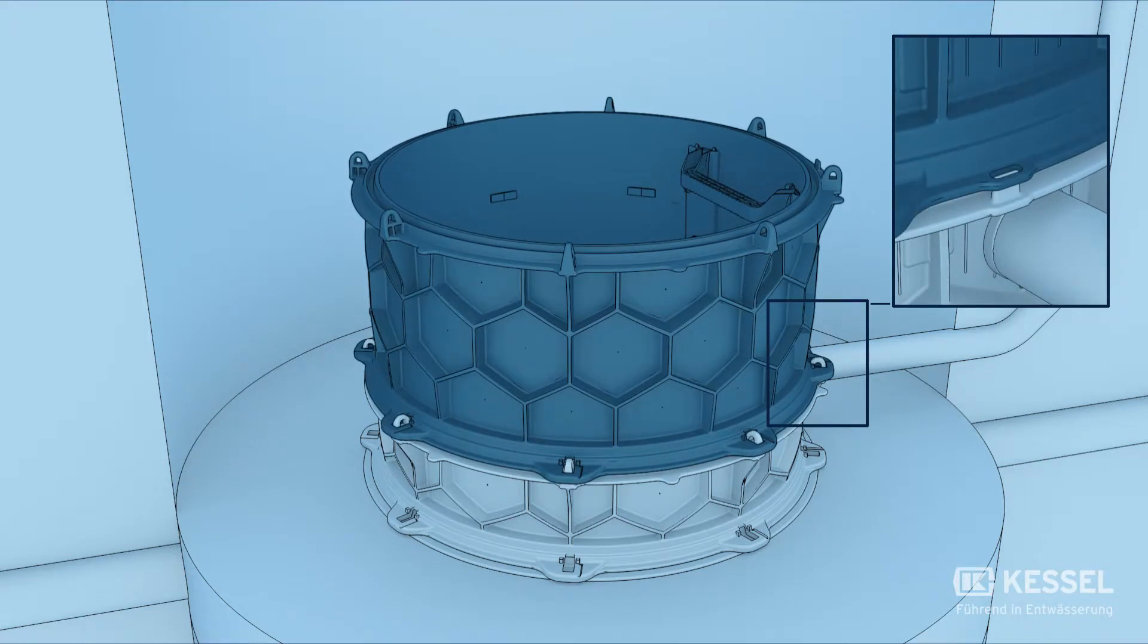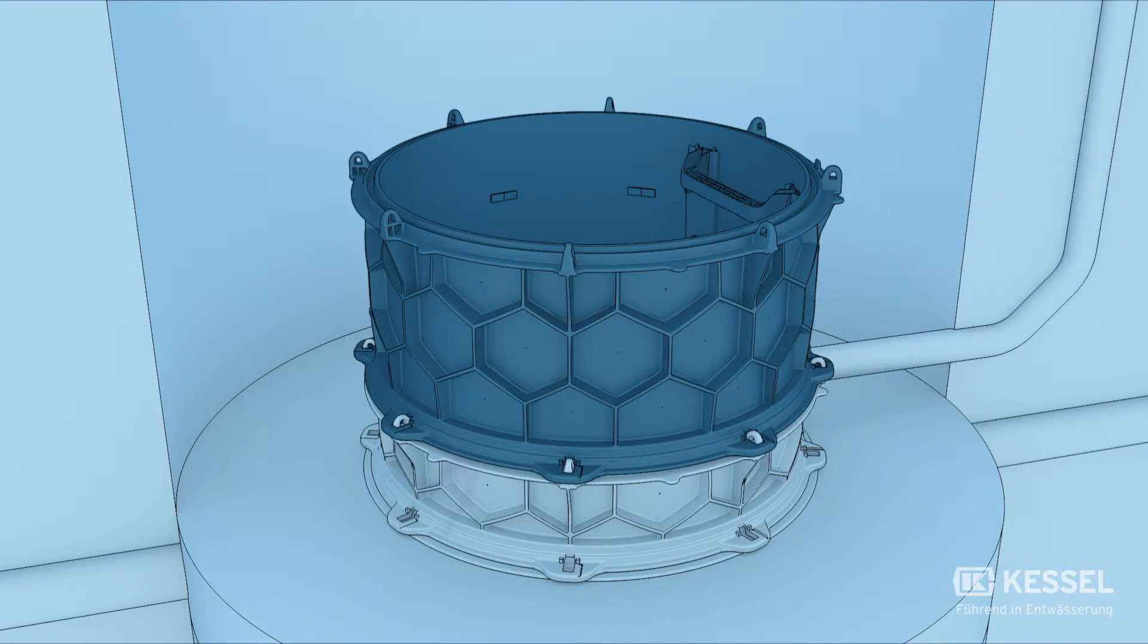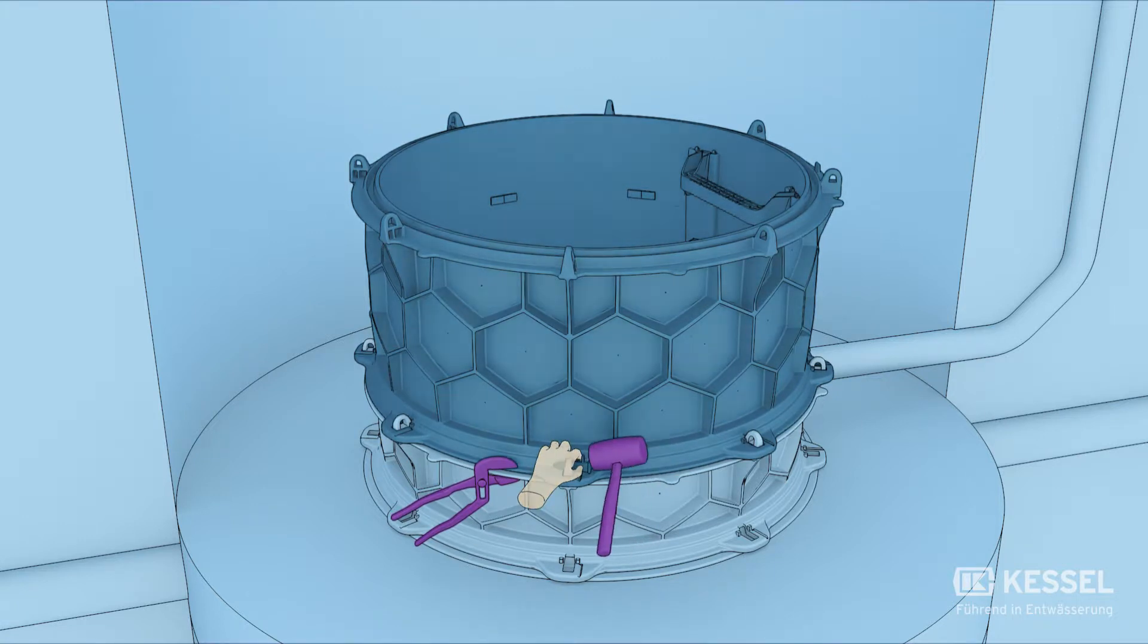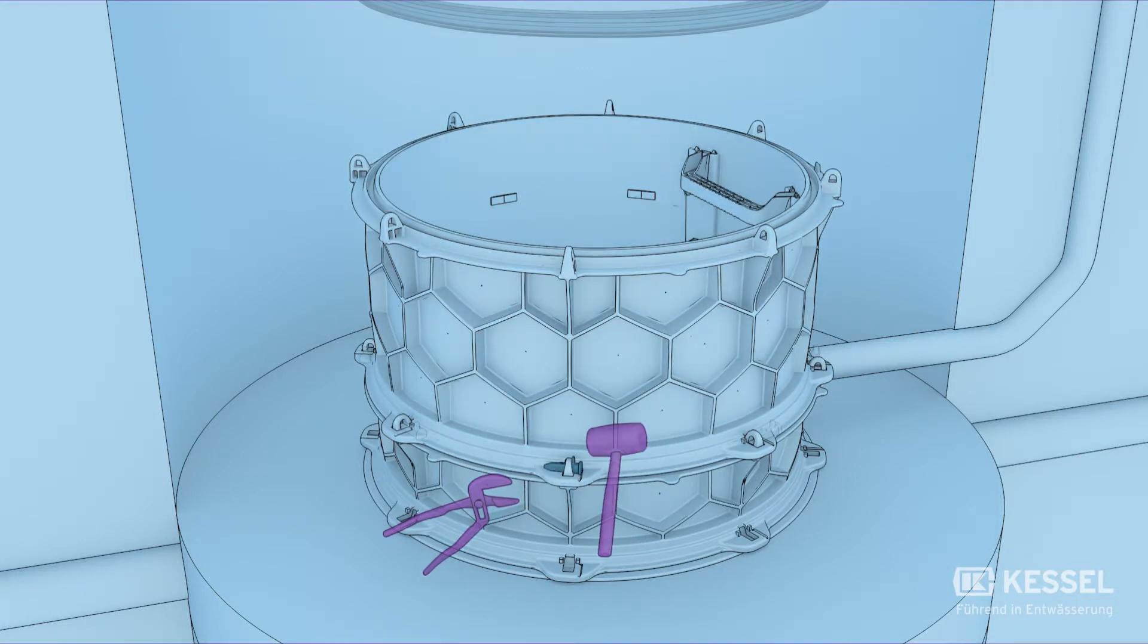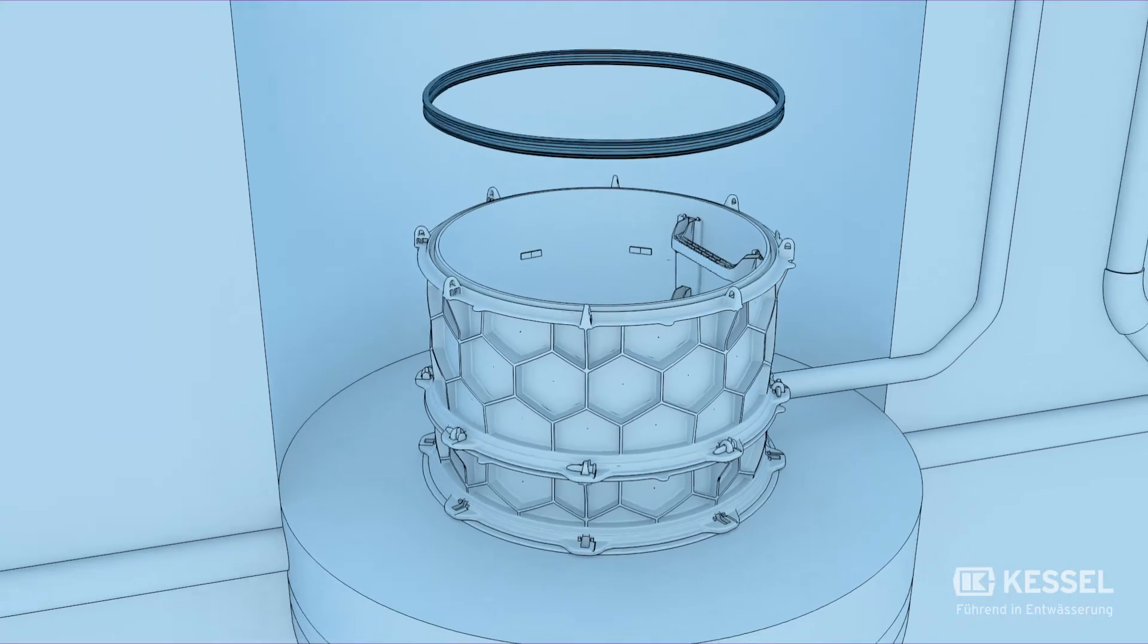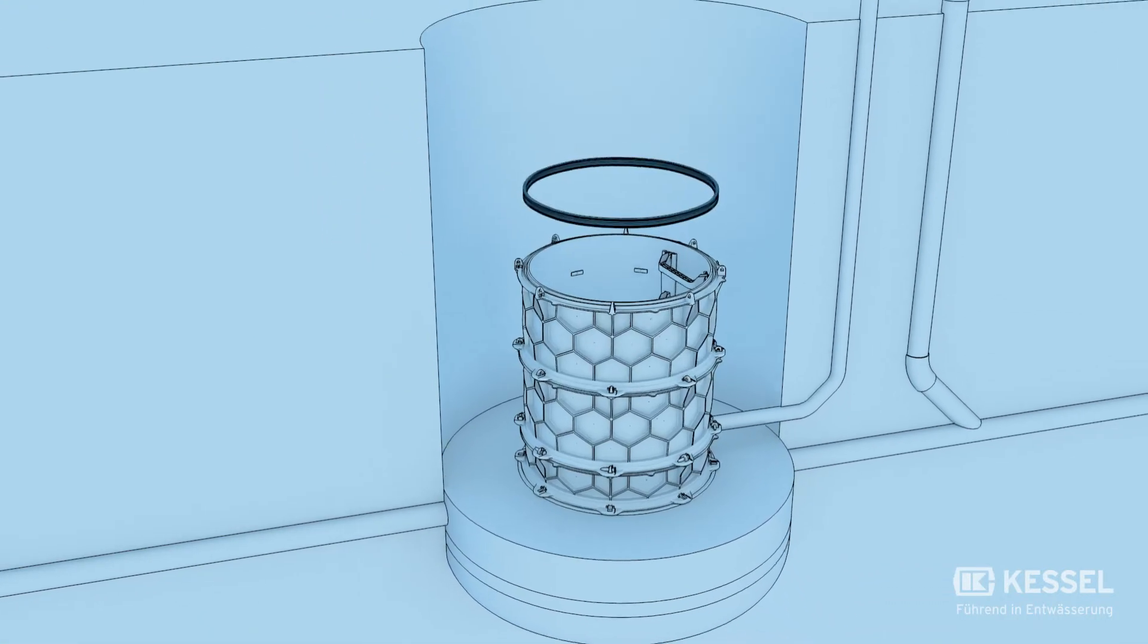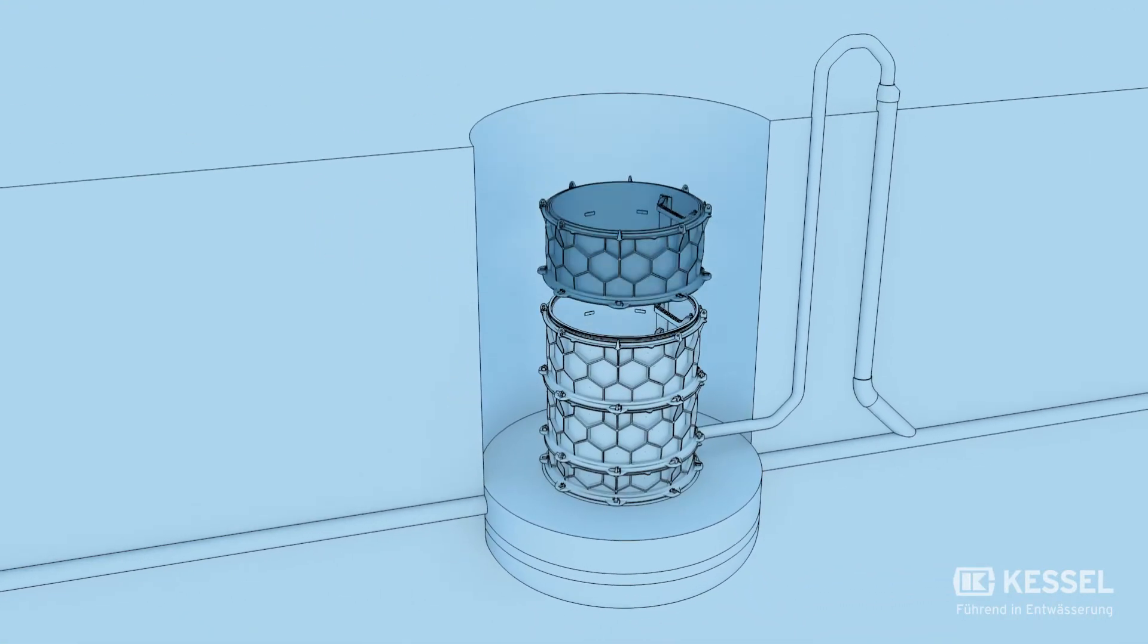Attention! The recess of the upper element must be placed on the mandrel of the underlying element. Now we press the connecting surfaces together with a pair of pliers and strike the locking wedges crosswise into the surrounding eyelets with a hammer. We repeat these steps until the desired height is reached.